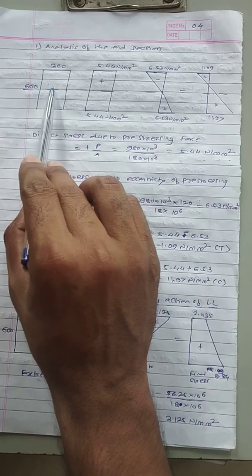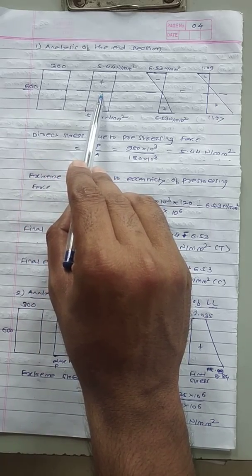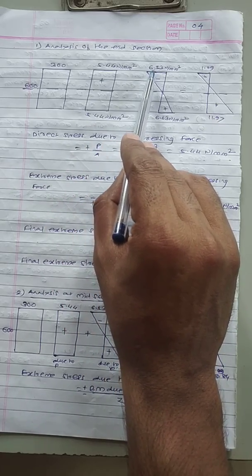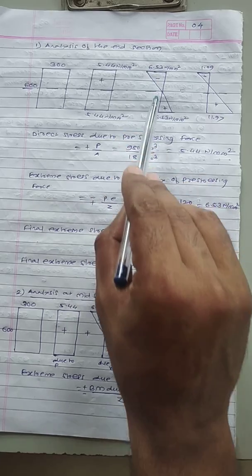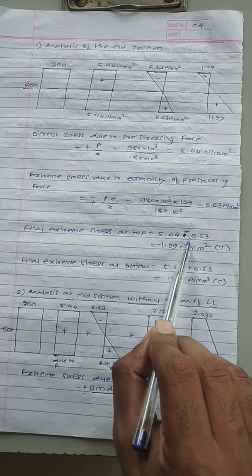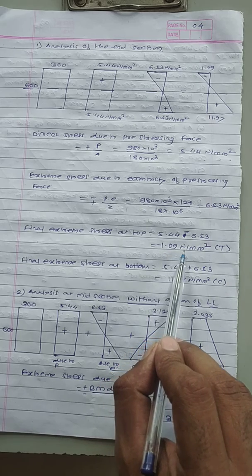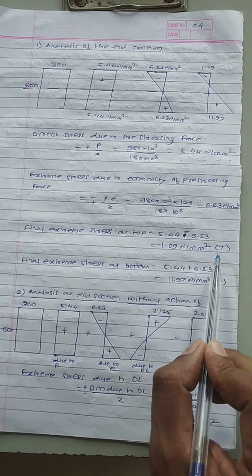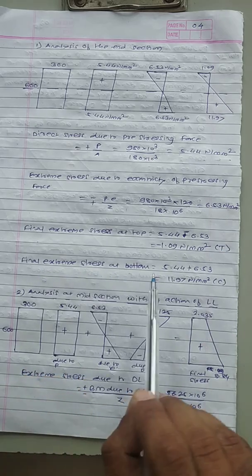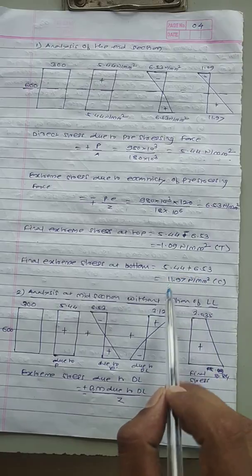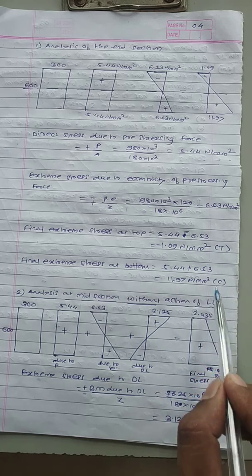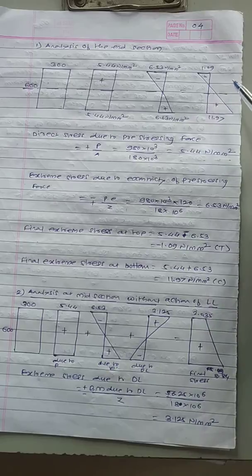In the stress diagram for the end section: the direct stress P/A = 5.44 N/mm² (uniform compression). The eccentricity stress PE/Z = 6.53 N/mm² (negative at top, positive at bottom). Final extreme stress at the top = 5.44 − 6.53 = −1.09 N/mm² (negative, indicating tension). Final extreme stress at the bottom = 5.44 + 6.53 = 11.97 N/mm² (positive, indicating compression).